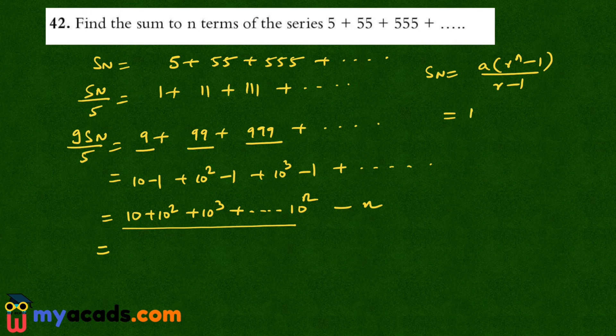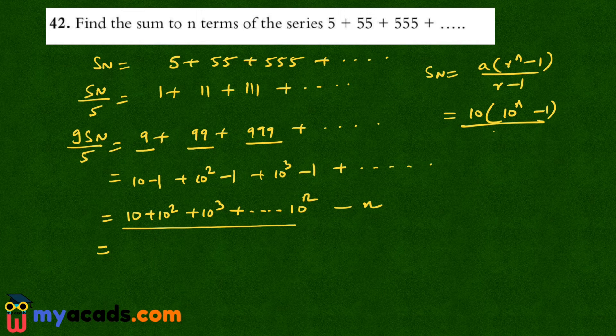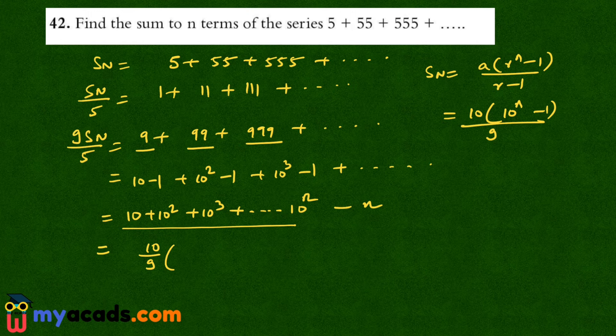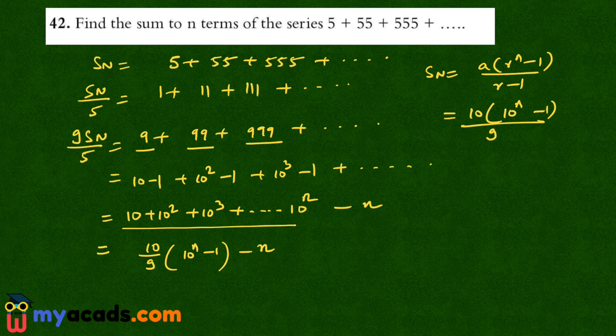So here a is 10, r is 10, 10 raised to the power n minus 1 upon 10 minus 1 that is 9. So this is 10 by 9 into 10 raised to the power n minus 1 minus n.